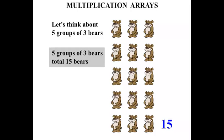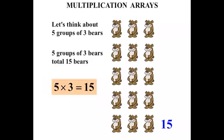Now that's a sentence, and we can write that as a number sentence as well. Five groups of three we can write as five times three. The total is fifteen, we can write that it equals fifteen. So five times three equals fifteen — that's a number sentence.